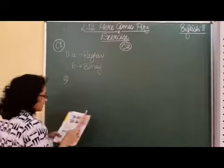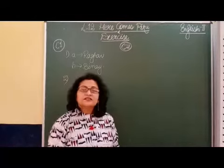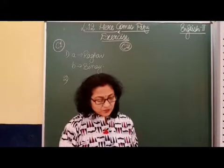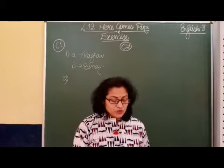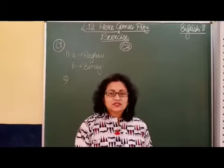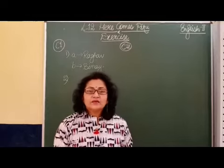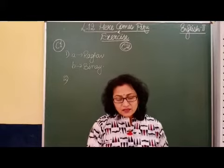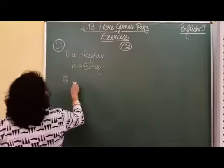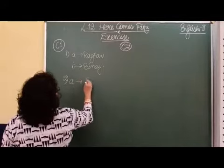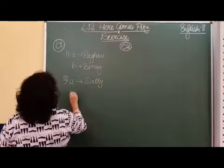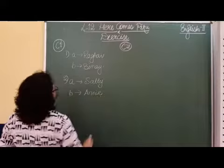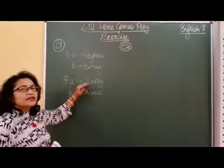Number two. Let us do this picture activity and I will explain. Next we have number two. Annie is younger. Now we need to write the name of the person. So in A we will write the older person, and in B we will write Annie.